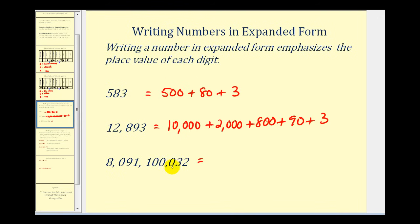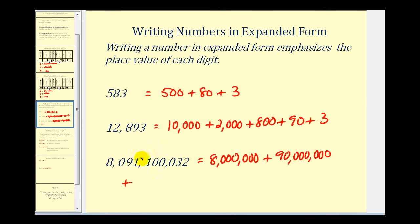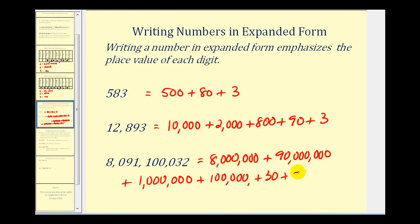For this next number, we have the thousands, millions, and billions. So this would be eight billion, plus — now because there's a zero in the hundred-millions place value, we do not need to include that — so we'll have plus ninety million, plus one million, plus one hundred thousand. And the next non-zero digit represents thirty, and then plus two.